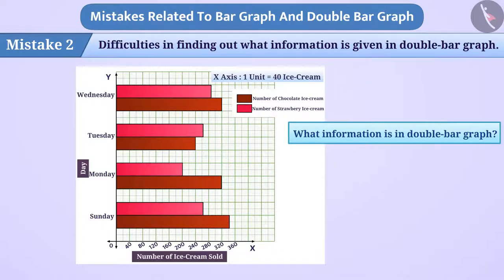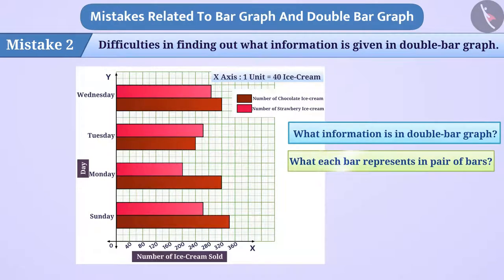To find out what information is shown in a double bar graph, it is necessary to look at what is represented on the x-axis and the y-axis, as well as understanding what each bar represents in a pair of bars.